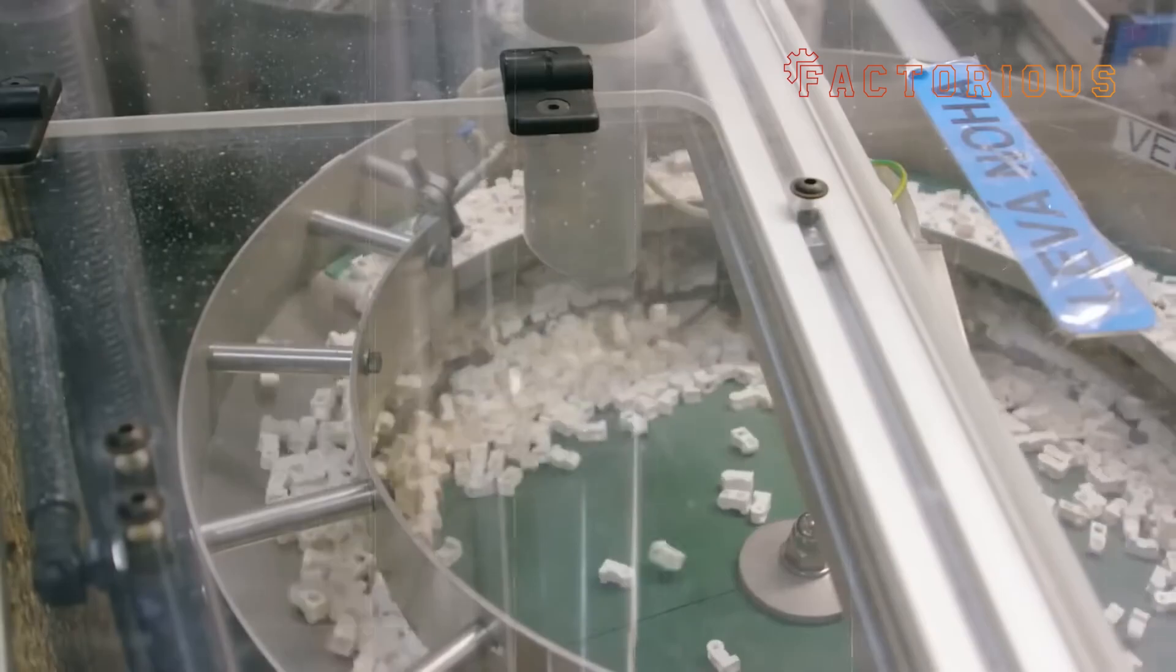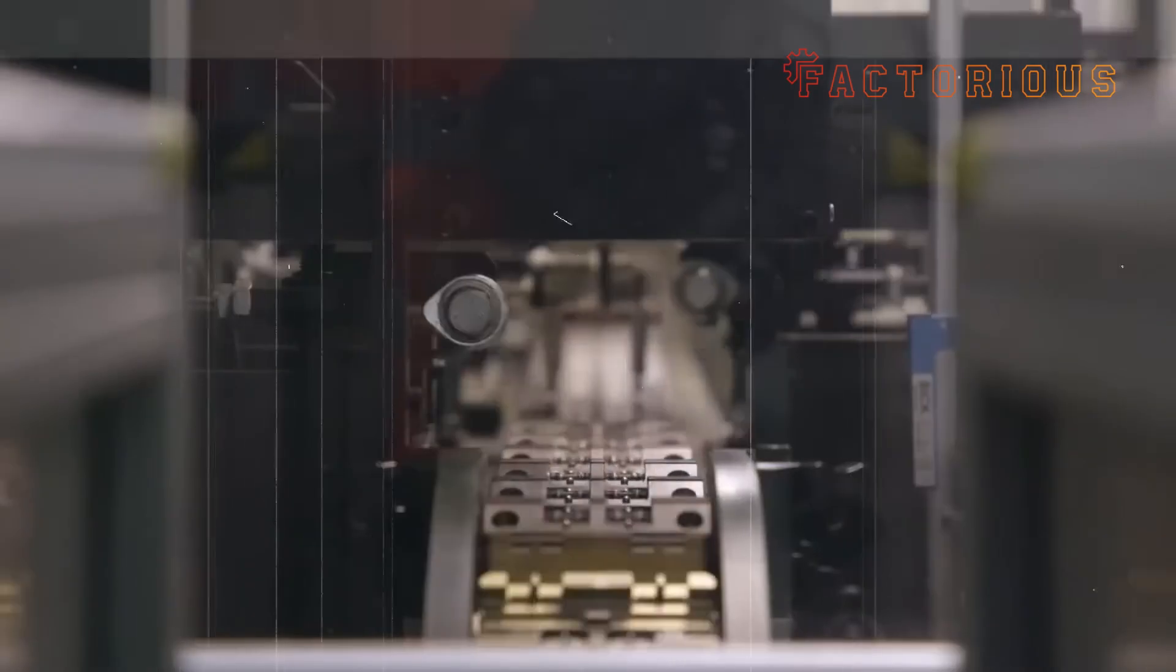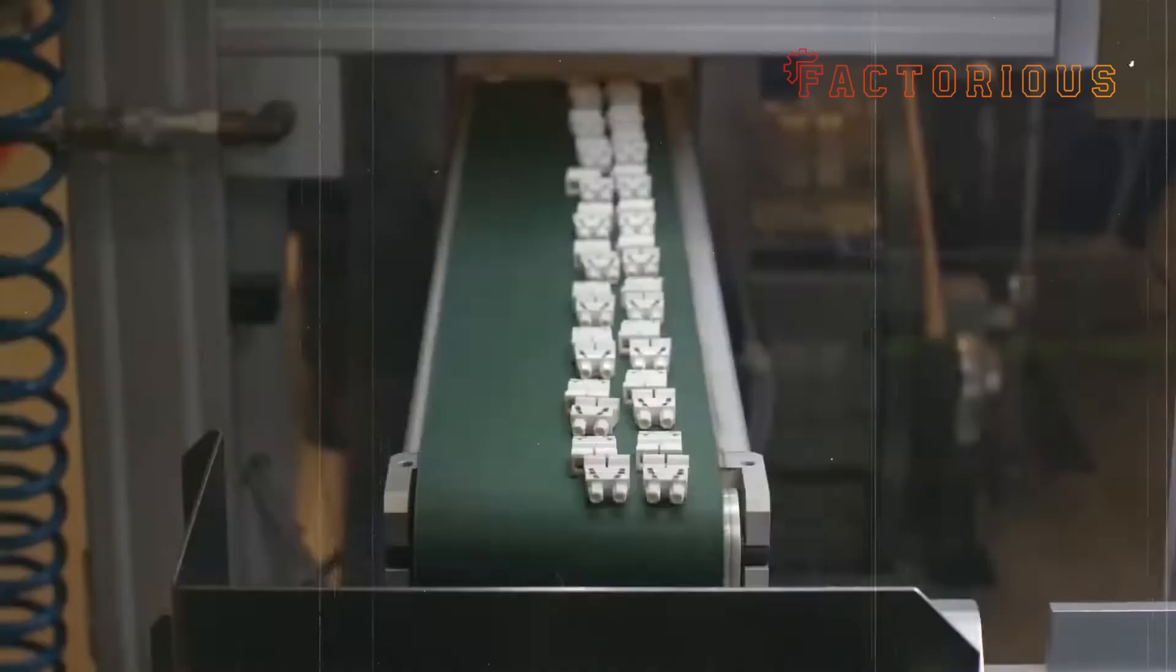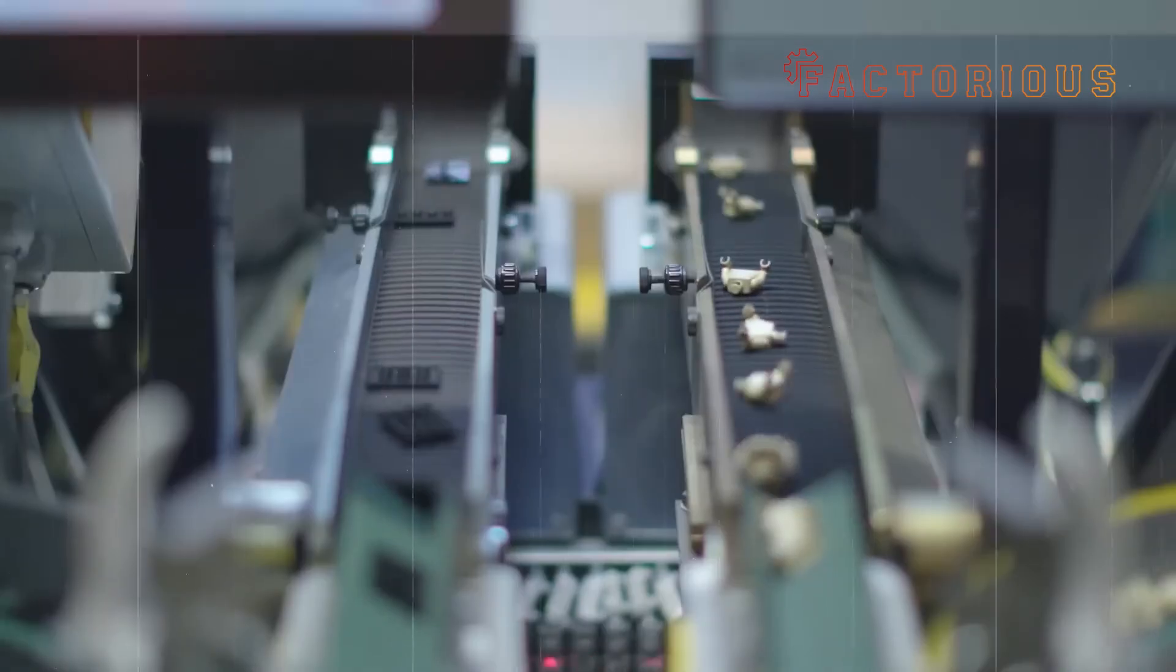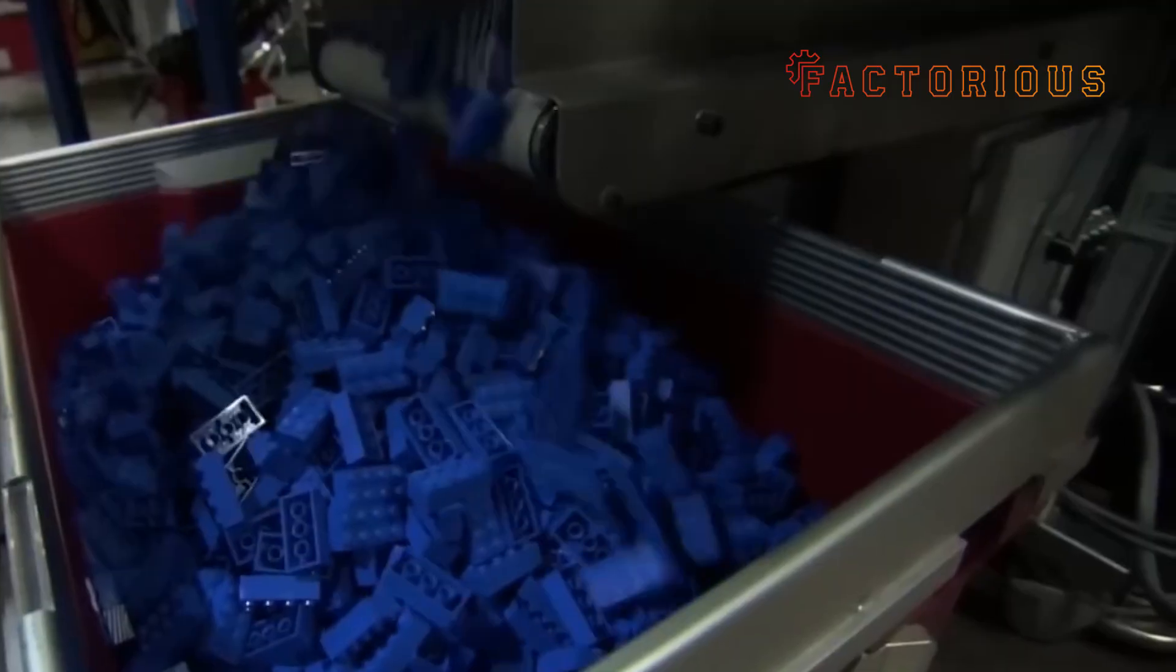From here, the bins are sent through automated systems that move them using robotic arms and conveyors to a cooling area. This is where the plastic stabilizes completely and reaches room temperature. Now, you might think that's it, but Lego takes it up a notch.